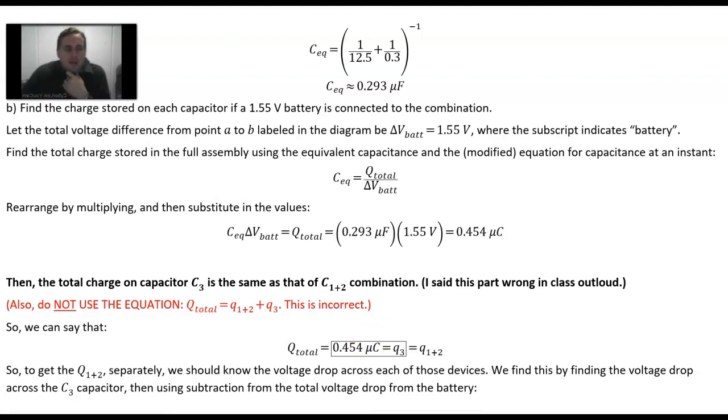But if we want to get q_1,2 separately, we have to know what the voltage is across each of those capacitors. Why is that? Because since the voltage across each of those devices will depend on each capacitor's capacitance, then we have to figure out how much charge is on each of those capacitors.